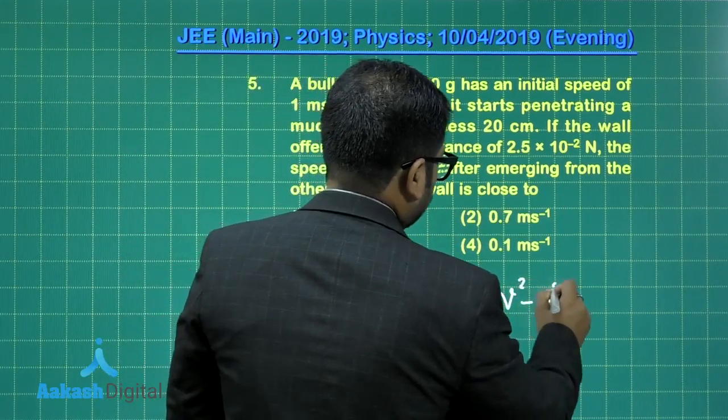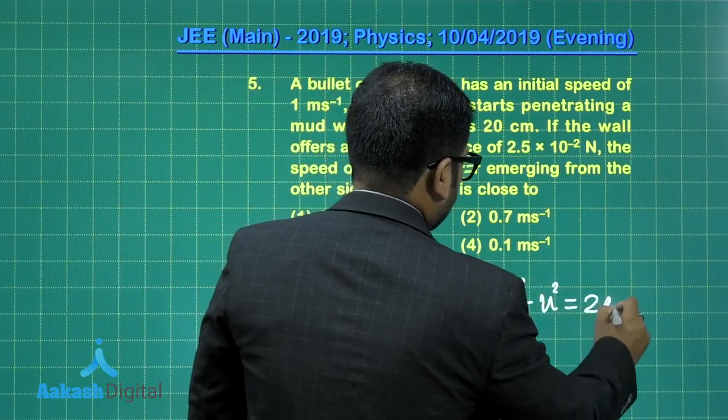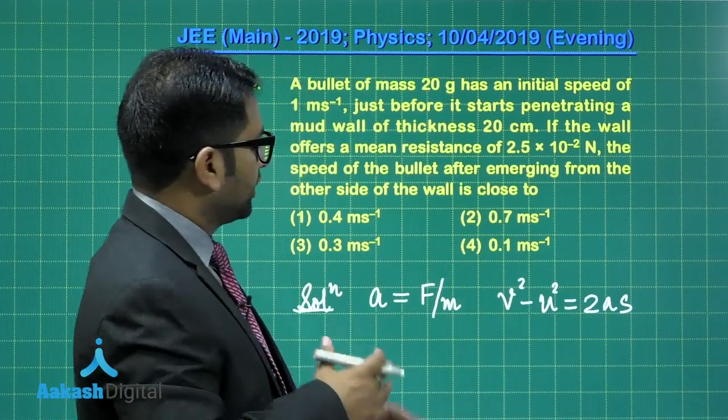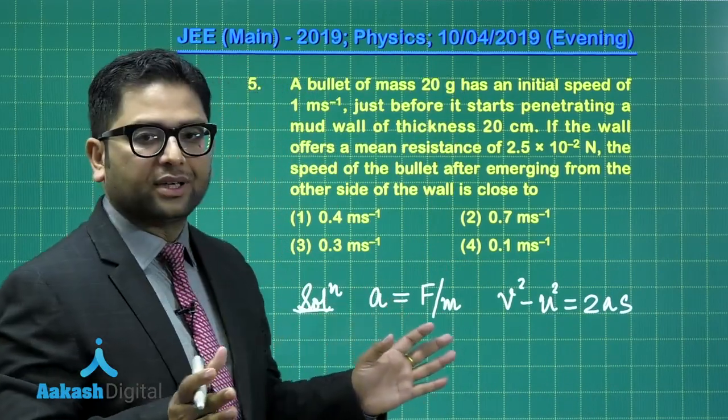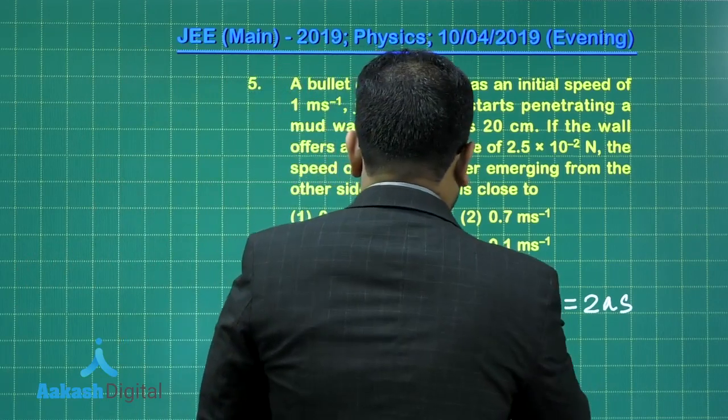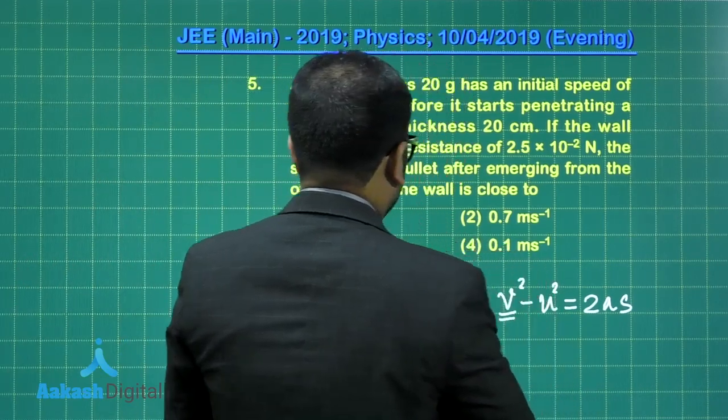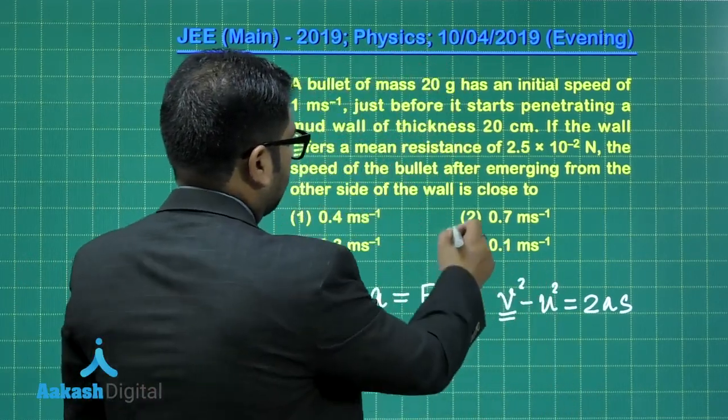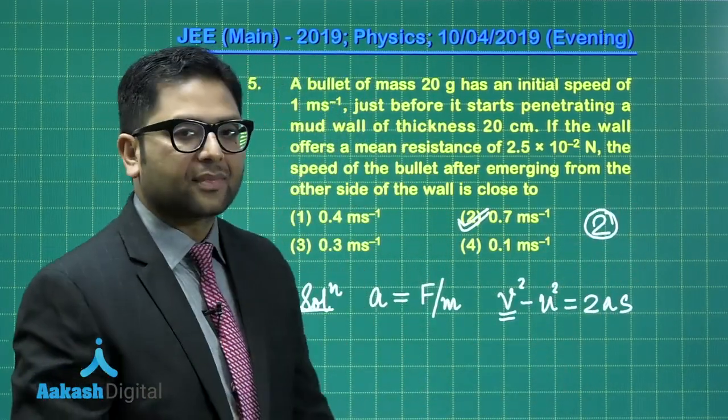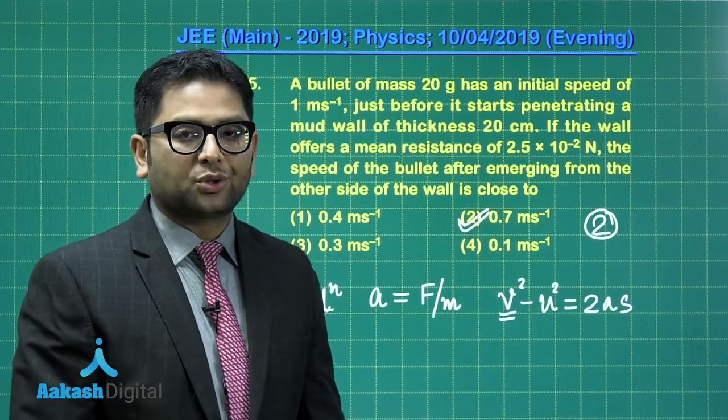Then we need to calculate the speed. So v squared minus u squared equals 2as. Just be slightly careful with the unit, you need to place everything into SI unit. The value of final speed would come out to be 0.7 meters per second. Option number two is the correct one for this question.